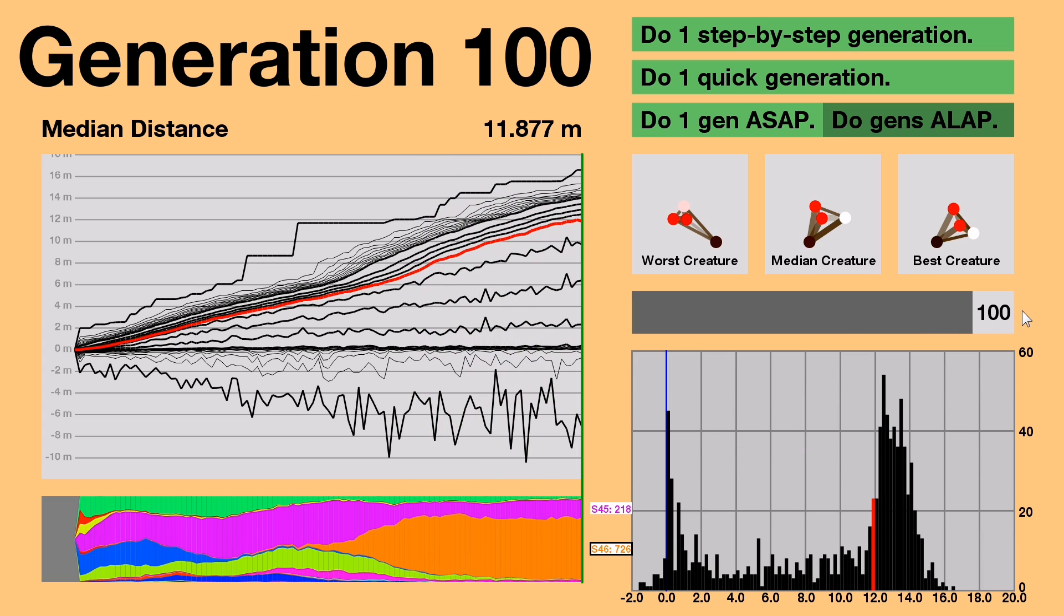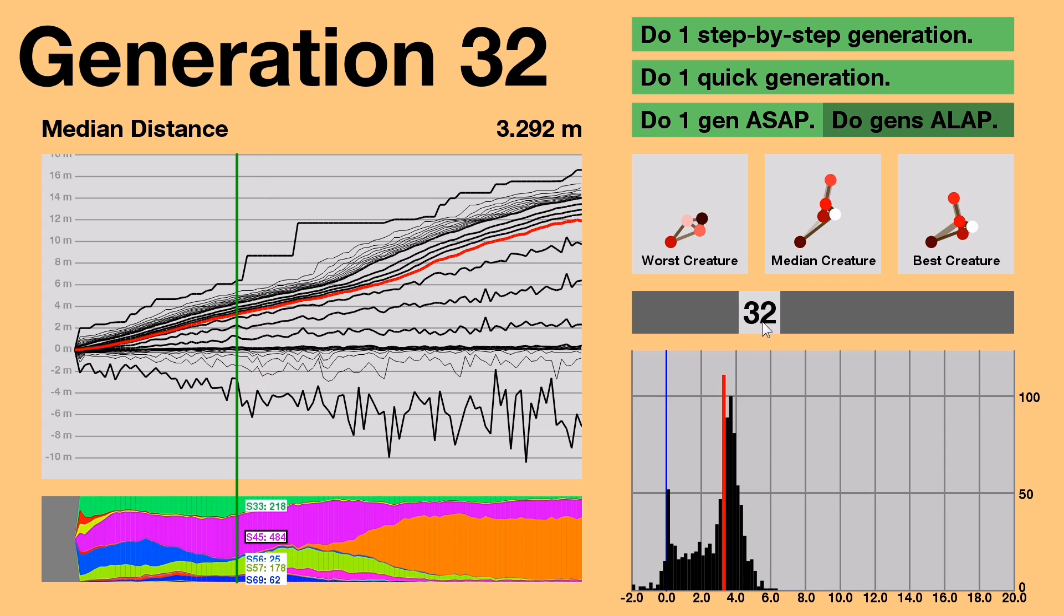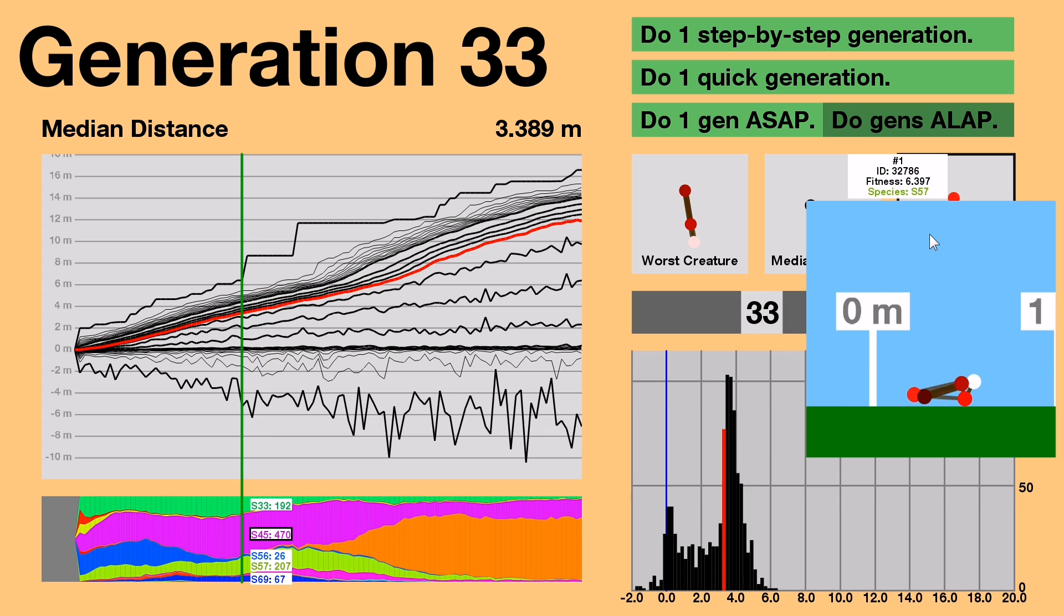Alright, now what happened at those breakthrough points, like at generation 34? Before the breakthrough, we've got a megacreature. Its dark node in the back is what it pushes off of to move forward, but notice how the node spends a long time in the air. It's wasting opportunities to go forward.